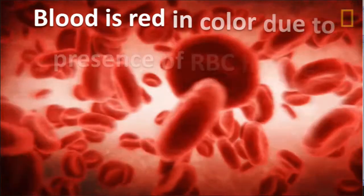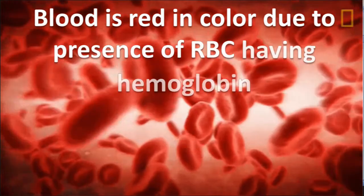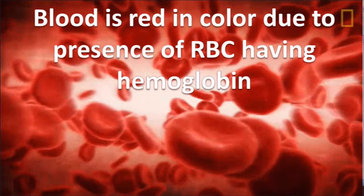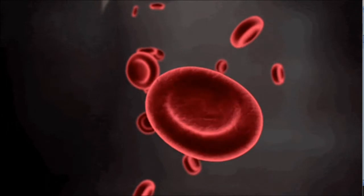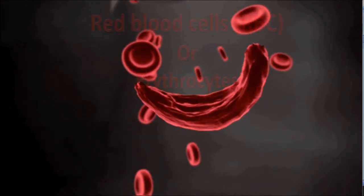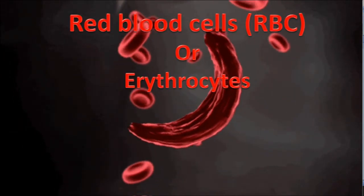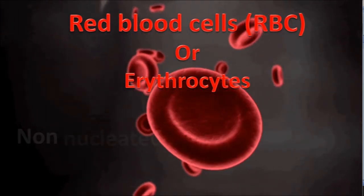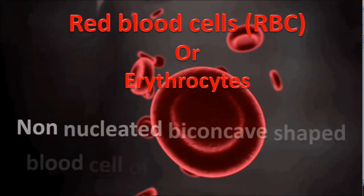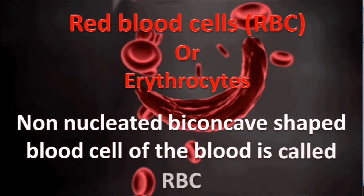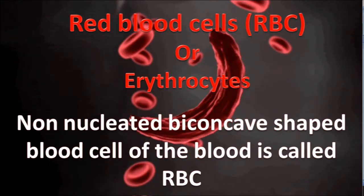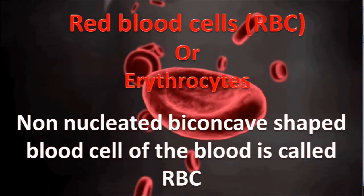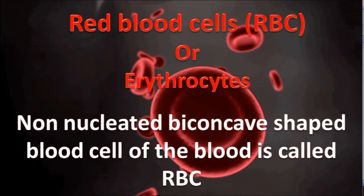Blood is red in color due to the presence of red blood cells (RBC), which are made up of hemoglobin. Red blood cells, or erythrocytes, are non-nucleated, biconcave-shaped blood cells. They do not contain a nucleus and are found in a biconcave or disc shape.